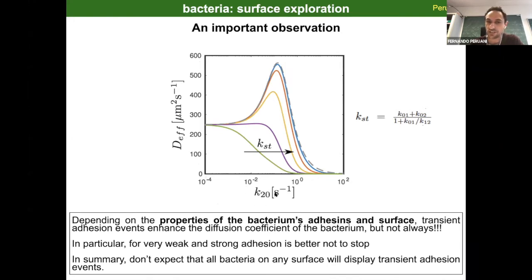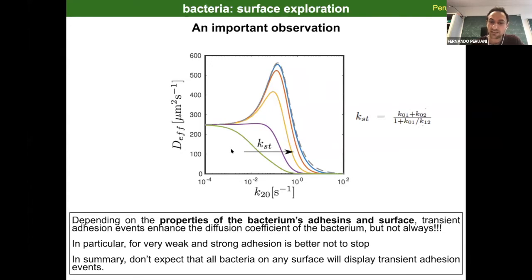An important observation: the different colored curves correspond to different values of k_st, a combination of the other transition rates. Not all curves have a local maximum — the violet and green ones do not. The take-home message is that depending on the bacterium's adhesion and surface properties, adhesion events enhance the diffusion coefficient, but not always. If the adhesion to the surface is either very weak or very strong, you cannot increase the diffusion coefficient by performing stop events — in fact, stop events become detrimental.